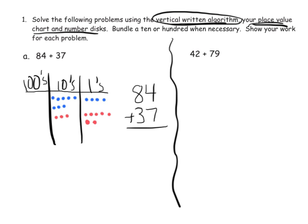Now let's add them together. First we look at the 1s column. We have 4 up here plus 7 down here, so that's 11 ones. We know that we can cash 10 of them in for an extra 10 over here, and then we have 1 left over. So here's 10 ones, and that cashes in to equal an extra 1 in the 10s column, and we have 1 single unit left over.